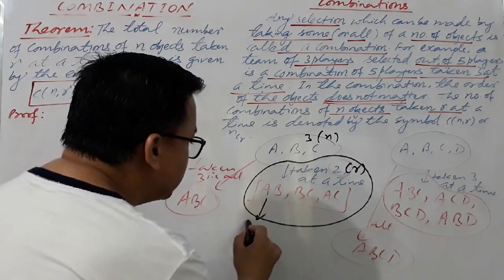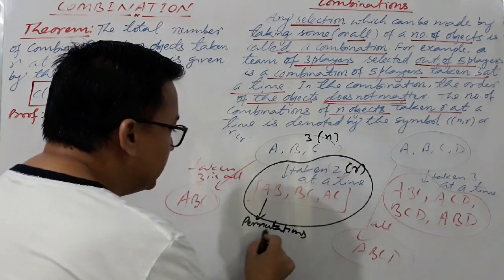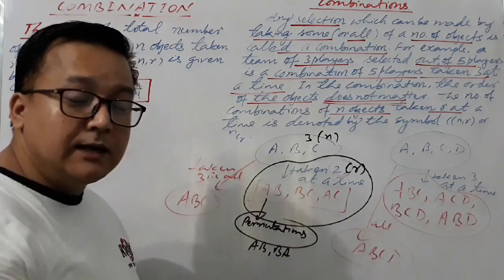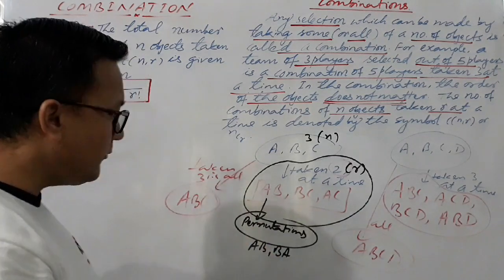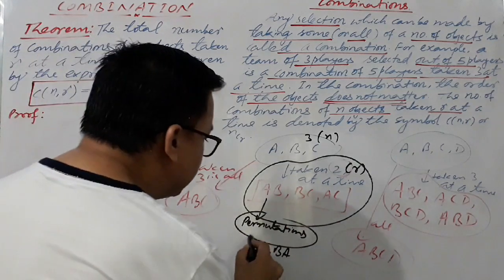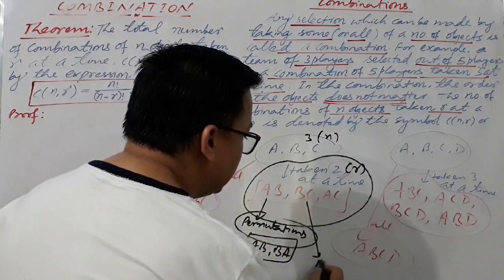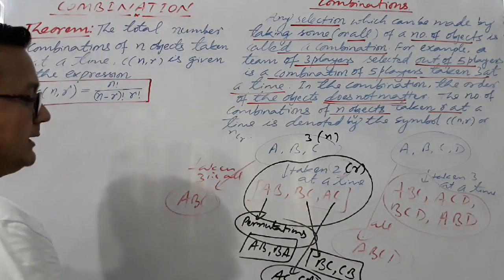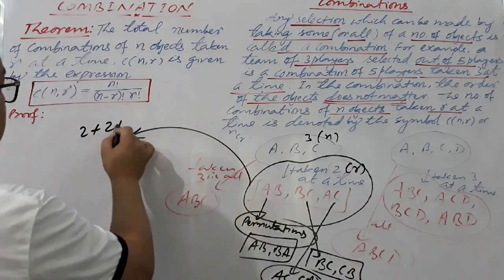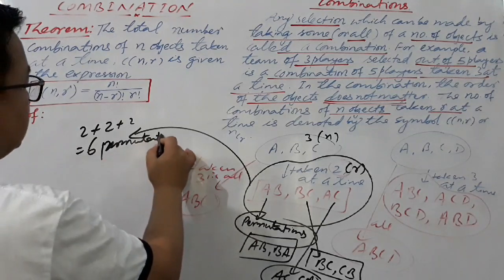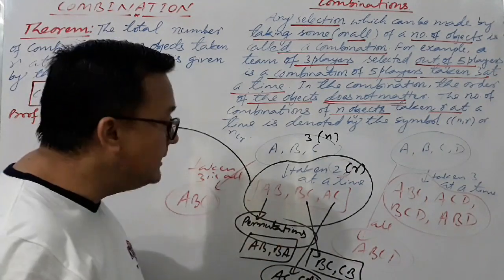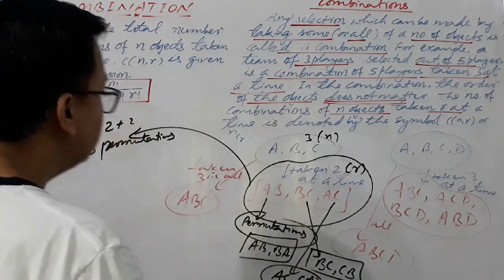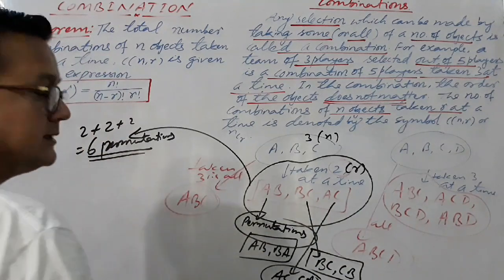From the combination ab — how many permutations can you make? You get ab and ba, so two permutations. Similarly from bc you get bc and cb — two permutations. And from ac you get ac and ca — two permutations. Total permutations: two plus two plus two equals six permutations. Each combination of two objects produces two permutations, so total six permutations.